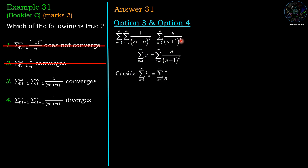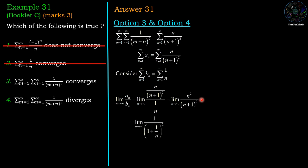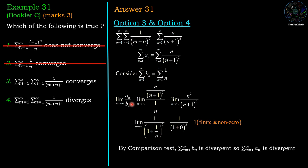Here a_n = n/(n+1)^2. We consider b_n = 1/n. By the comparison test, taking the ratio limit n→∞ of a_n/b_n, we get n^2/(n+1)^2. Dividing numerator and denominator by n^2 and applying the limit as n→∞, we get 1/(1+0)^2 = 1, which is finite and non-zero. By the comparison test, a_n and b_n converge and diverge simultaneously. Since b_n = 1/n is divergent (p=1 from the P-test), a_n must also be divergent. So Option 3 is wrong and Option 4 is correct.